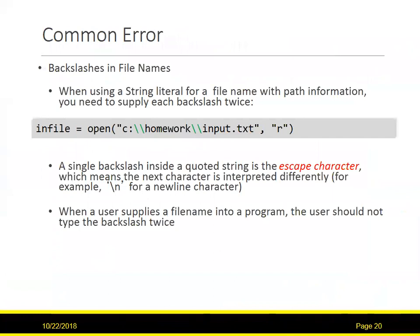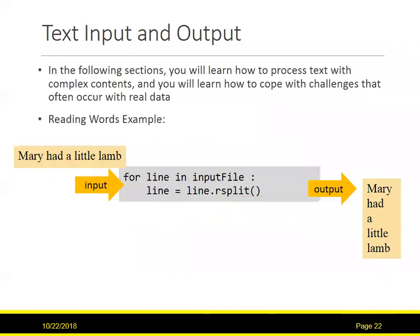Common errors: when using a string literal as a file name with path information, you can't just use single backslashes. A single backslash is an escape character, so if you want a backslash in a path you need to put it in twice — for example C:\homework\input.txt. If the user is supplying the path following your program, they should not type the backslash twice.